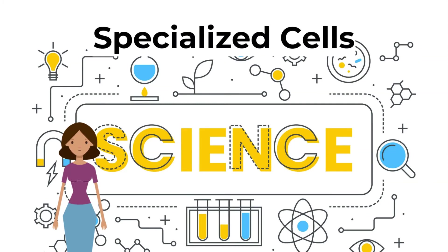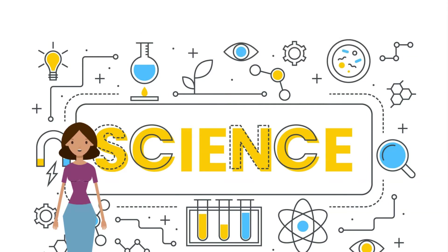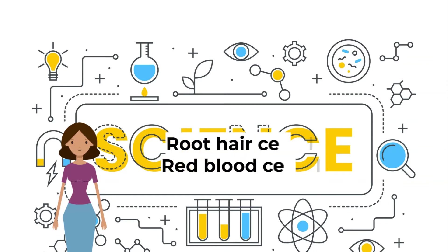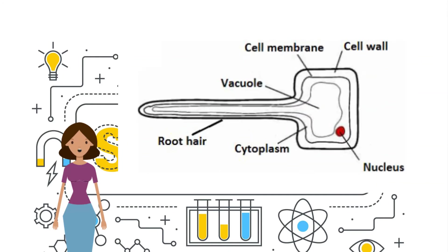Moving on, let's look at specialized cells. You need to know that cells can be specialized in their functions to maximize efficiency. You need to know two specialized cells in particular, the root hair cell and the red blood cell. Firstly, root hair cells. The main purpose of the root hair cells is to maximize the efficiency of water and nutrient absorption. There are three main specialized characteristics to accomplish this.